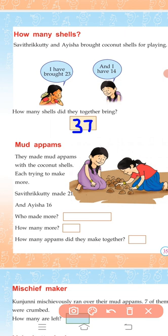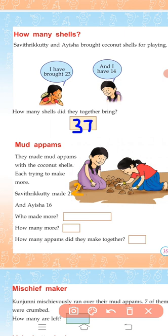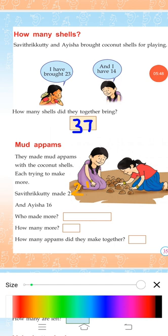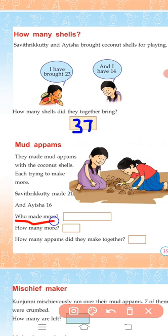They made mud abams with coconut shells, each trying to make more. Savathri Kutti made 21. Aisha made 16. Who made more? Savathri Kutti.